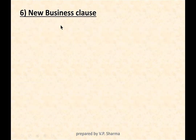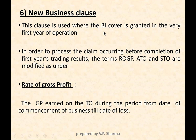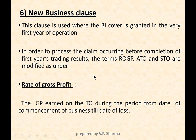The new business clause is applicable where BI cover is granted in the very first year of operation. This is a tricky situation: in the first year, there is no previous data — no standard turnover, no annual turnover, no last financial year's turnover. This clause is attached to policies where BI cover is taken for the first time, in order to process claims occurring before completion of the first year's trading results.